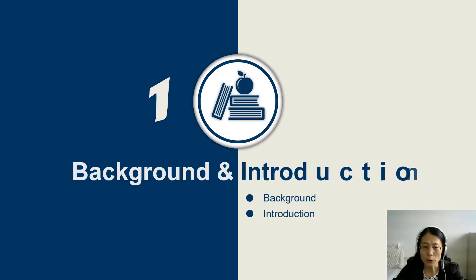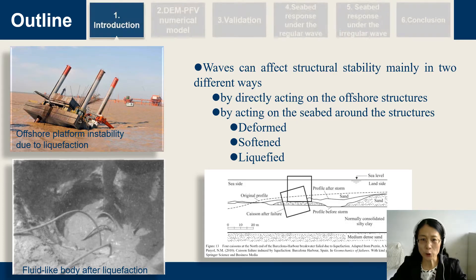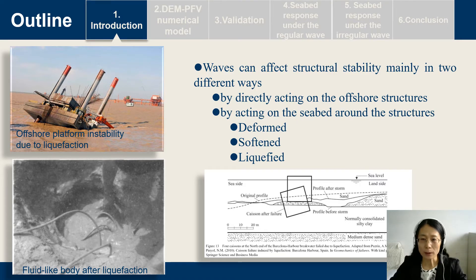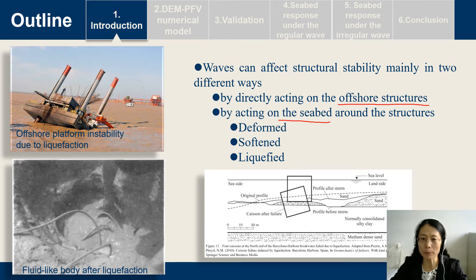The first part is the background and introduction. Waves can affect structural stability in two different ways: by directly acting on the offshore structure, and by acting on the seabed around the structure. For example, waves can cause softening and liquefaction of the seabed. There are many offshore platform failures due to liquefaction.